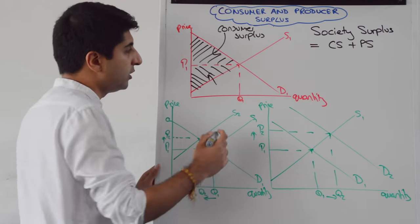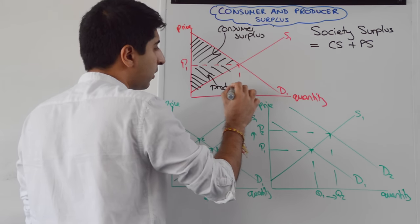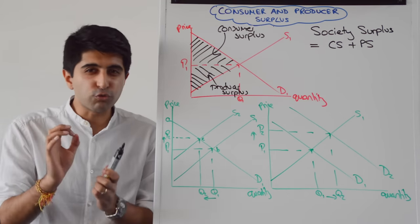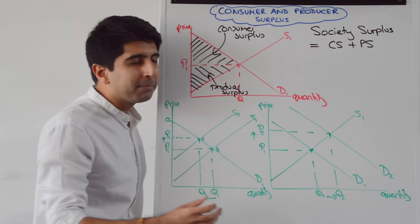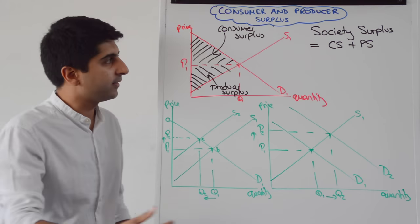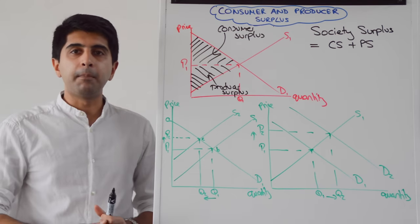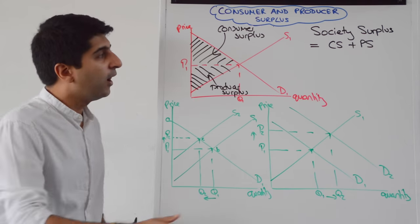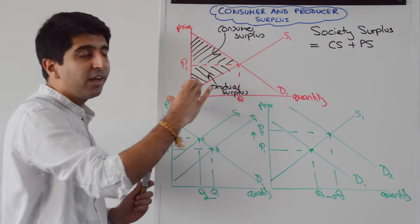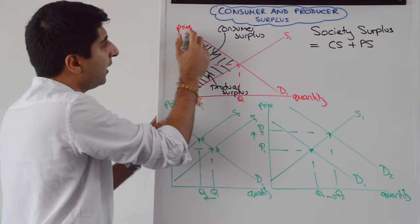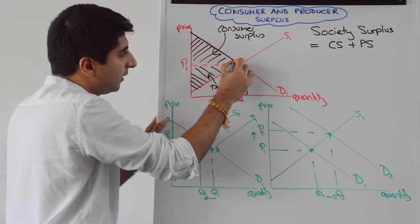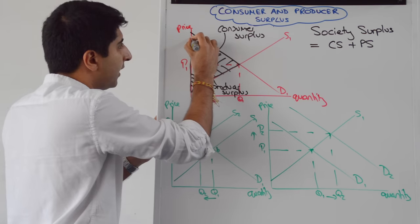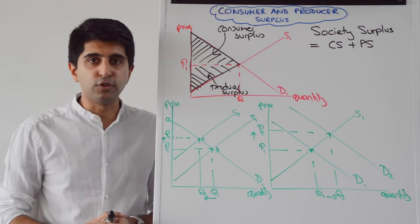Remember, they don't always have to be triangles, but usually they will be. Society surplus is the sum of consumer and producer surplus — when we add these two together, that is society surplus. So society surplus is this entire triangle, the sum of consumer and producer surplus, which is very important for the allocation of scarce resources.